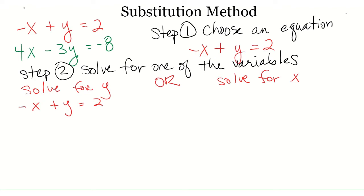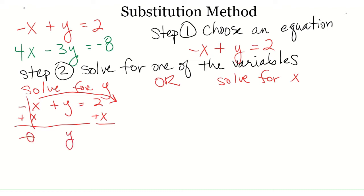In order to get y by itself, I need to move that x over to the other side. We do that by doing the opposite function. This is a negative x, so I need to add x to both sides in order to move that x from the left side over to the right side. That's going to cancel those out to make zero x's on the left. I bring my y down and that gives me x plus two on the right side. So now I have rewritten my equation in terms of y — I just solved for y.